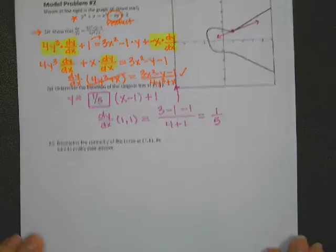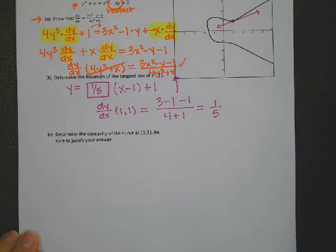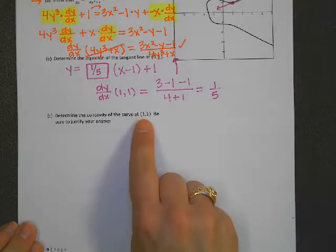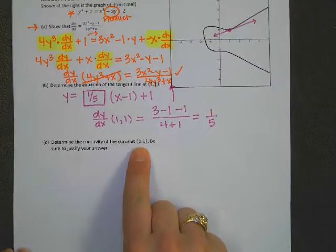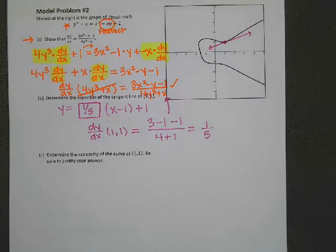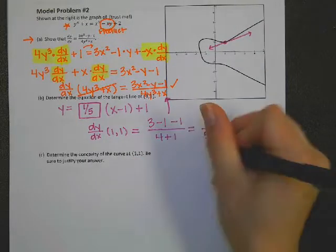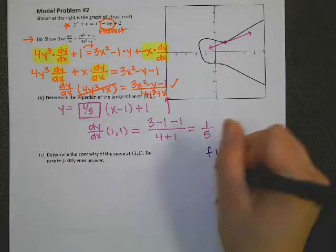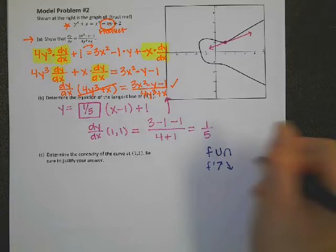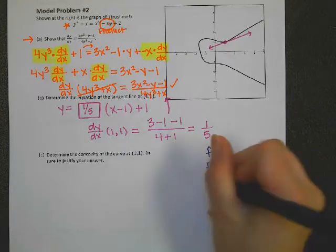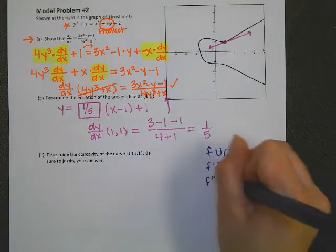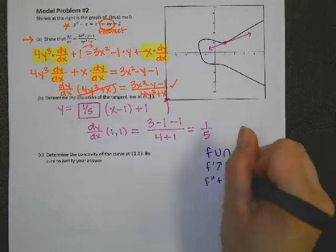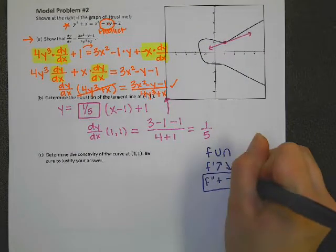All right, so here is part C. Now, if I wanted to find the concavity of the curve at (1,1), remember based off our fun chart, if I want to think about concavity of a function, then I could look at the first derivative graph, but I really don't know what this looks like. So instead, I'm going to look at where the second derivative is positive or negative.